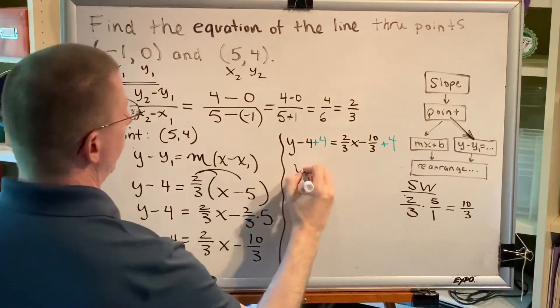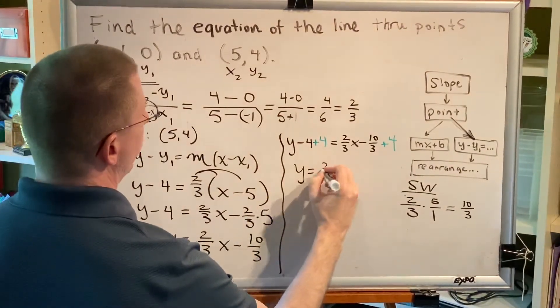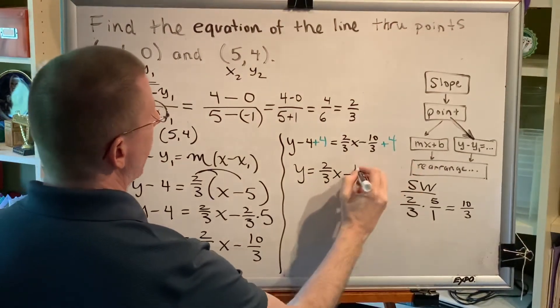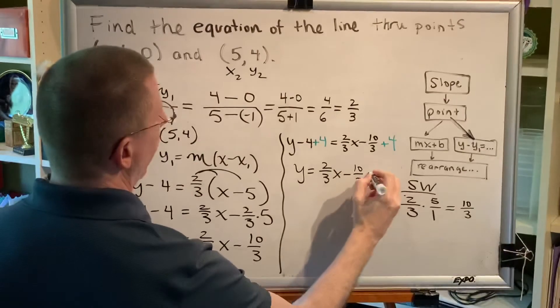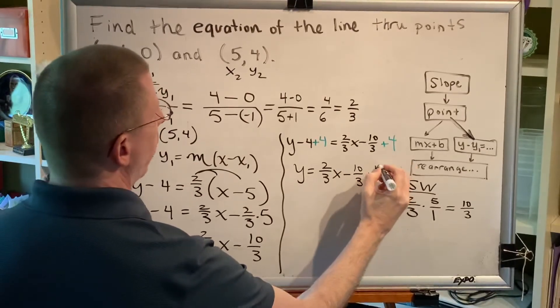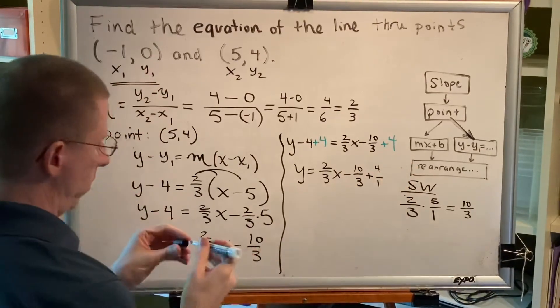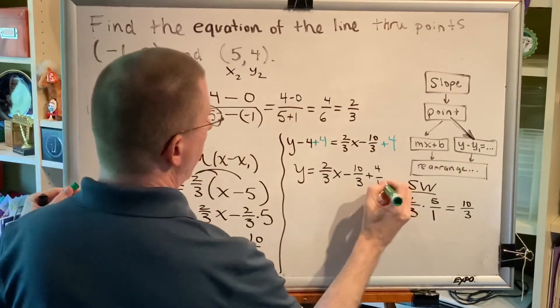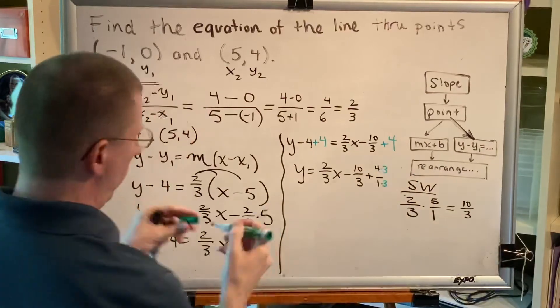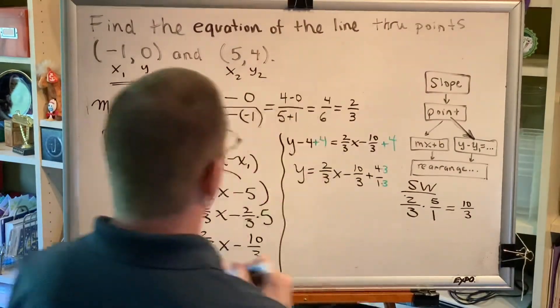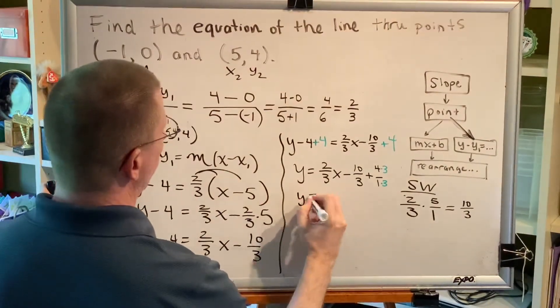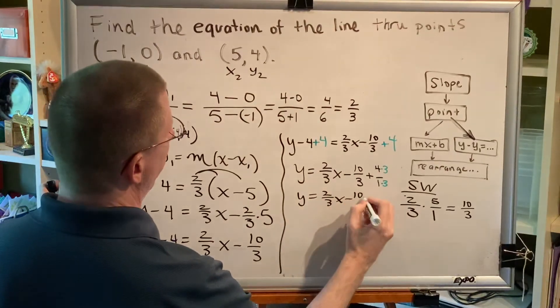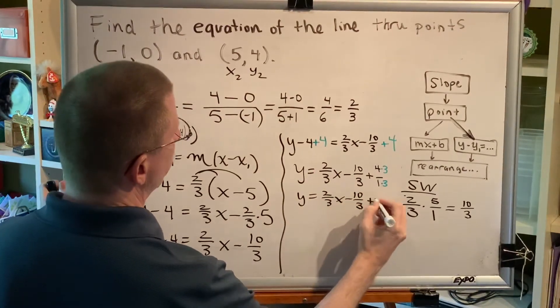The minus 4 plus 4 cancel leaving us y equals 2/3 x and then we need to find a way to get these to come together. Well one thing we could write is that 4 is the same as 4/1. And then to get a common denominator we can multiply both the 1 and the 4 by 3. So then we would have y equals 2/3 x minus 10/3 plus 12/3.